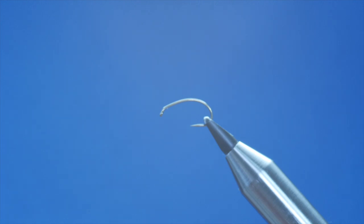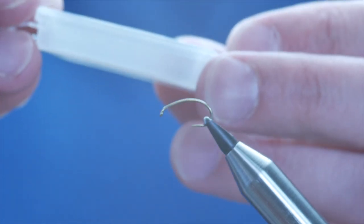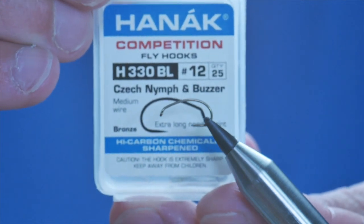Hello and thanks for joining me again. Today I'm going to tie a small shrimp pattern for the rivers. It's lightly weighted and what I have in the vise at the moment is a Hanak 330 barbless hook in size 12.